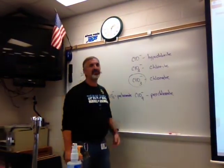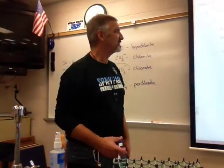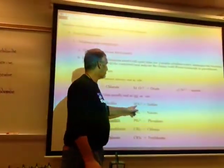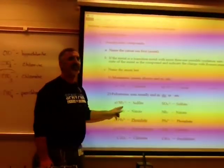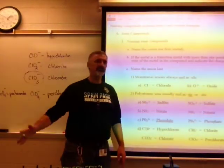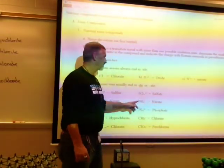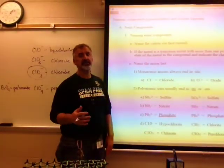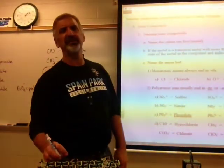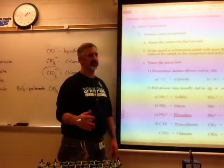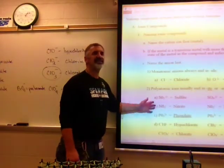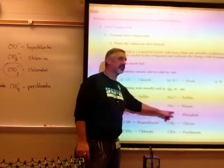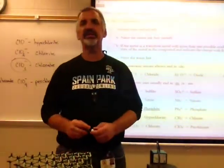By knowing one pattern you can figure out twelve or more. You know all the chlorines, bromines, and iodines. The -ite is always one less oxygen than the -ate, hypo--ite is one less than the -ite, and per--ate is one more than the -ate. Similarly, sulfate is SO4 2-minus, so selenate is SeO4 2-minus, selenite is SeO3 2-minus. Phosphate is PO4 3-minus, so arsenate is AsO4 3-minus. Elements in the same family have the same number of valence electrons, so they all bond the same way.